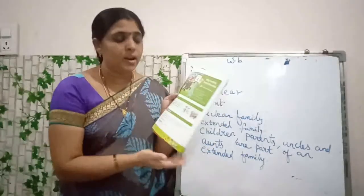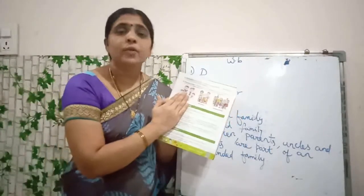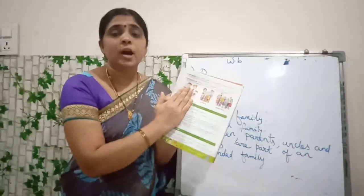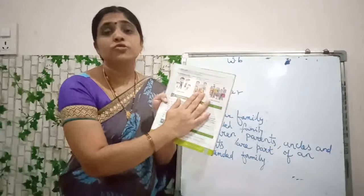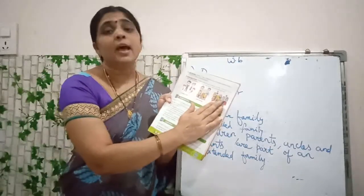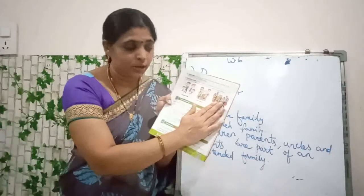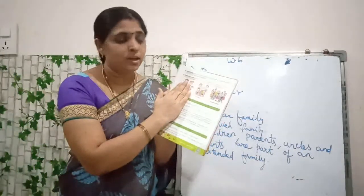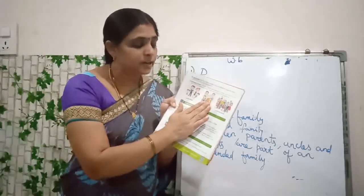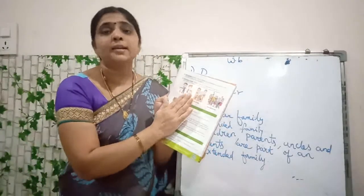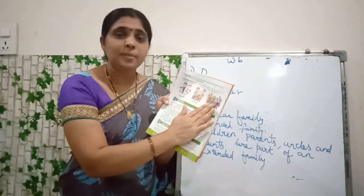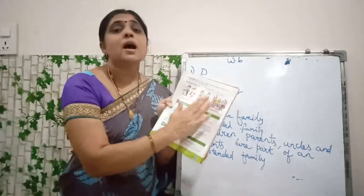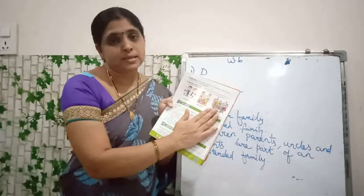Did you find the difference? Now, what is the next picture? Nuclear family. This one is joint family. This one is extended family. What is nuclear family, children? Children with their parents. Joint family means children with their parents and grandparents. Extended family means children with their parents, grandparents, uncle and aunt and cousins.